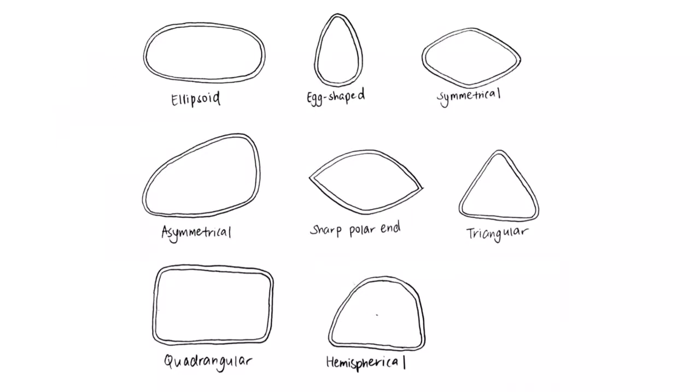They can be ellipsoid, egg-shaped, symmetrical, asymmetrical, contain sharp polar ends, triangular, quadrangular or hemispherical.